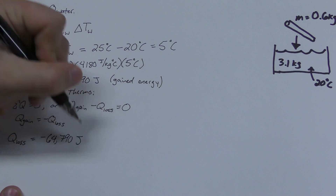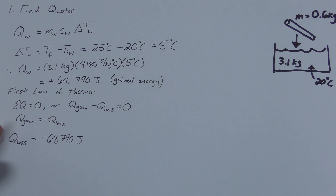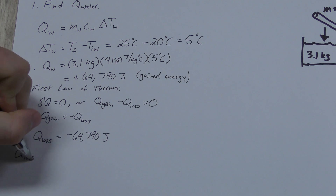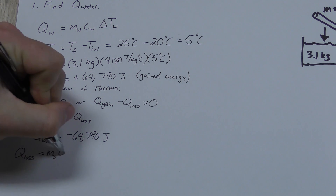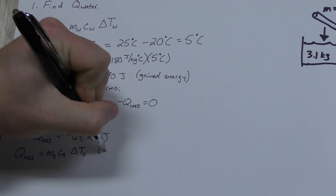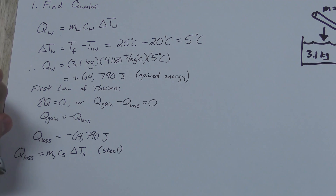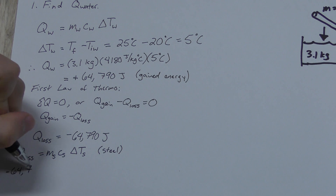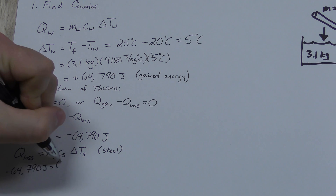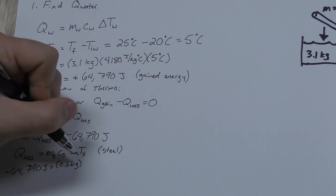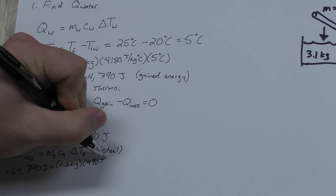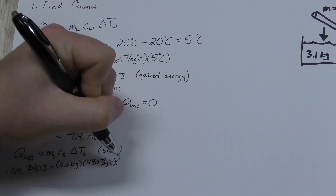So we can plug that in as the negative Q for steel. If we plug that into our equation, we can solve for the initial temperature, which we get as 245 degrees Celsius.